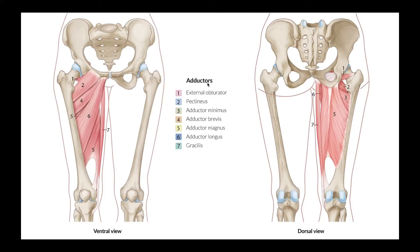Here's a list of all the major hip adductors. The first one is the obturator externus, or external obturator muscle — this one can assist a little bit in hip adduction, but its major function is external rotation of the hip, covered in a separate video. That leaves five others. Now, muscle number three, the adductor minimus, is actually a part of adductor magnus. Some sources will call it a separate muscle, but we'll get to that when we talk about adductor magnus.